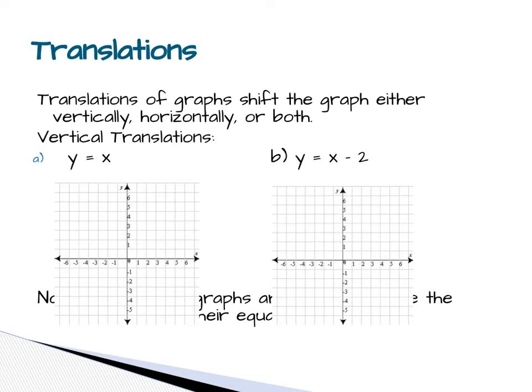So the first one is they want you to compare these two graphs, y equals x and y equals x minus 2. Y equals x happens to be the parent graph of a linear function, so you should know that the points are going to go 1, 1, 2, 2, 3, 3, 4, 4, 0, 0, negative 1, negative 1. Just like that. And I'm not going to draw the line, I'm just going to put a bunch of points so you can see where the line is going to go.